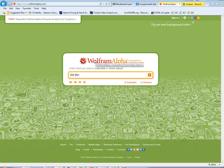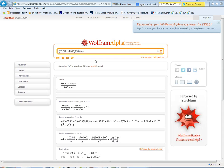So I'll do 59.99 plus 0.4m, and then I'll divide that by 900 plus m. So there is my equation, and I will just hit enter and just see what WolframAlpha produces.